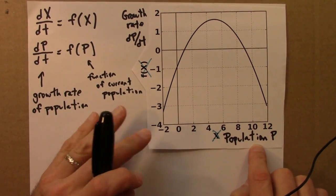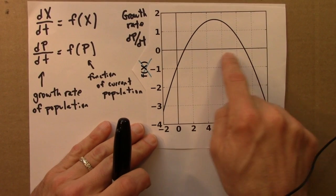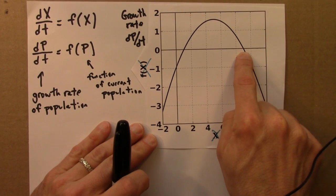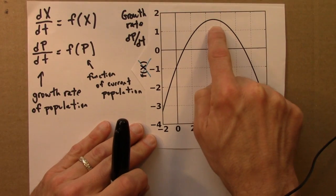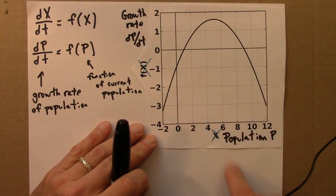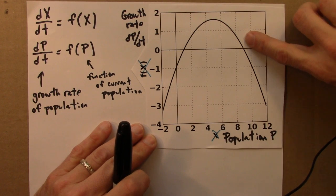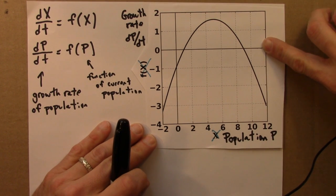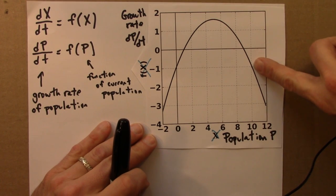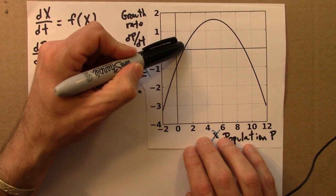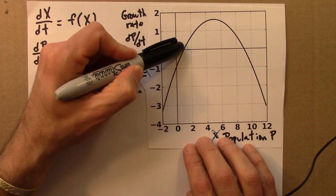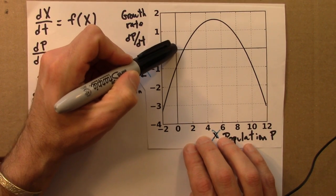So, we can see if the population is between 1 and 9, then the population will increase, because the growth rate is positive, the population is growing. If the population is greater than 9, then the population will decrease, because the growth rate is negative, and if the population is less than 1, the growth rate will decrease, again, because the growth rate is negative.